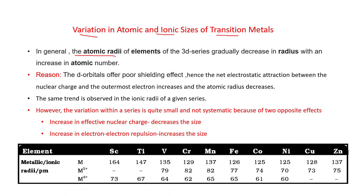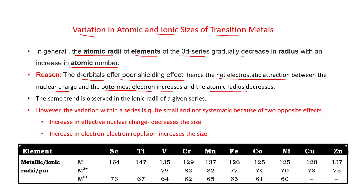In general, the atomic radii of elements of the 3d series gradually decrease in radius with an increase in atomic number. That is, if we go from left to right, there is a general decrease in atomic radius. The reason is that the D orbitals offer poor shielding effect. Hence the net electrostatic attraction between the nuclear charge and the outermost electron increases and atomic radius decreases. The same trend is observed in the ionic radii of a given series.